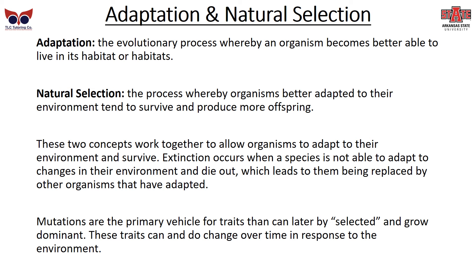Let's talk about adaptation and natural selection, which are part of the evolutionary process. An adaptation is the process where an organism becomes better able to live in its habitat. Natural selection is the process where organisms that are better adapted tend to survive and produce more offspring, while those less adapted produce fewer offspring and tend not to survive. Extinction occurs when a species is not able to adapt to changes in their environment and dies out, leading to replacement by other organisms that have adapted. Mutations are the primary vehicle for traits that can later be selected and grow dominant, and these traits can change over time in response to the environment.